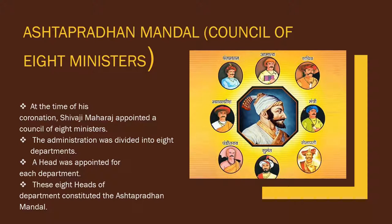The ministers had to answer whenever Maharaj questioned why things were not going as expected. They could not engage in any kind of corruption, as they had to give complete reports to Maharaj regularly. Shivaji Maharaj selected the council on the basis of merit and achievements — considering whether candidates were capable, could fulfill their duties well, and were trustworthy.